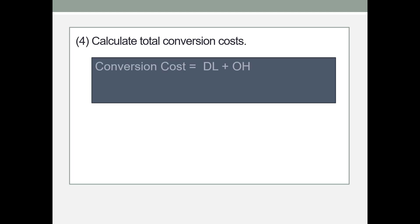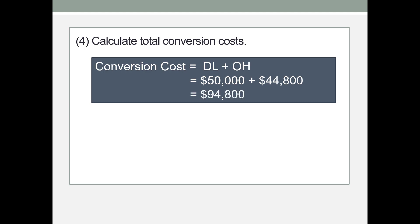Next, we'll calculate the total conversion costs. Remember, this is the cost of converting materials, so the formula is direct labor plus overhead. Our direct labor cost was $50,000 and our manufacturing overhead cost was $44,800, so total conversion costs are $94,800.